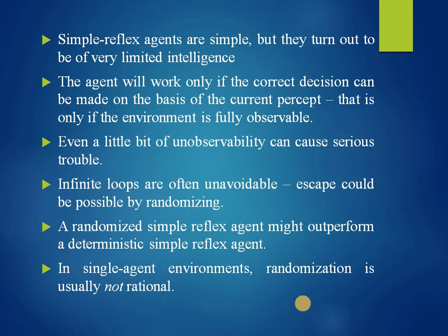Suppose a simple reflex vacuum agent has a damaged location sensor and only a dirt sensor — such an agent has only two possible percepts. It can suck in response to 'dirty', but what does it do in response to 'clean'? Moving left fails forever if it starts in square A, and moving right fails forever if it starts in square B. Infinite loops are often unavoidable for simple reflex agents operating in partially observable environments.